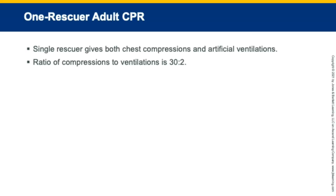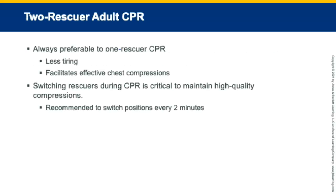For one-rescuer adult CPR, provide a continuous cycle of 30 compressions followed by two ventilations—a ratio of 30 to 2. Two-rescuer CPR is preferred over one-rescuer CPR, as it is less tiring and facilitates effective chest compressions. The compressor can be switched, and it is recommended to switch positions every two minutes to maintain high-quality compressions.